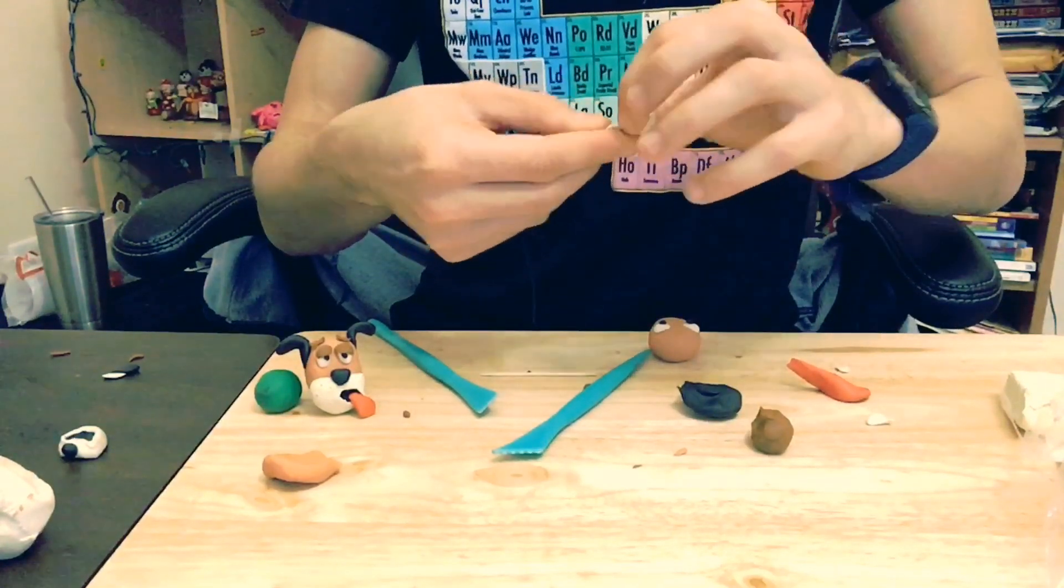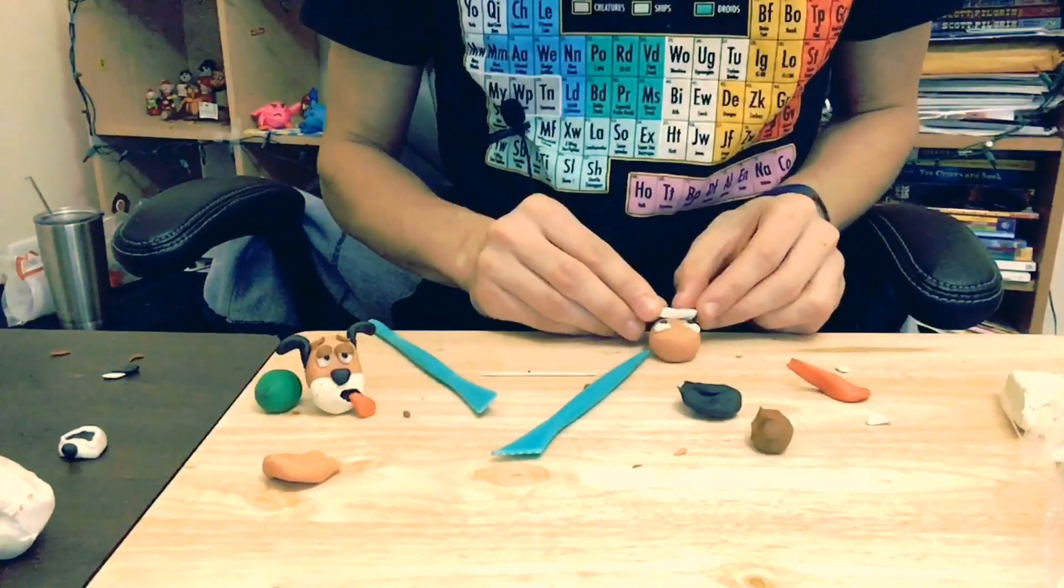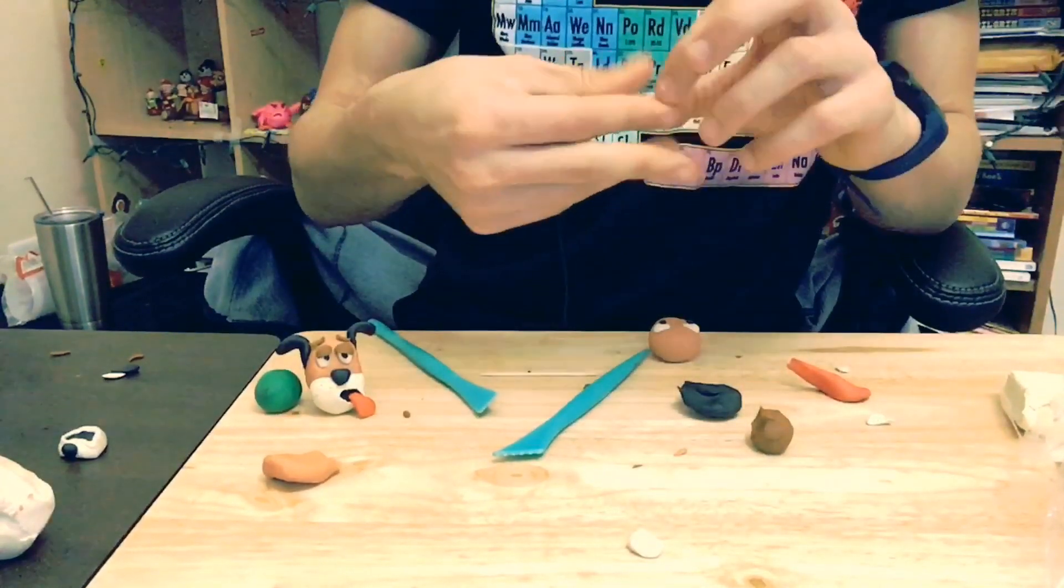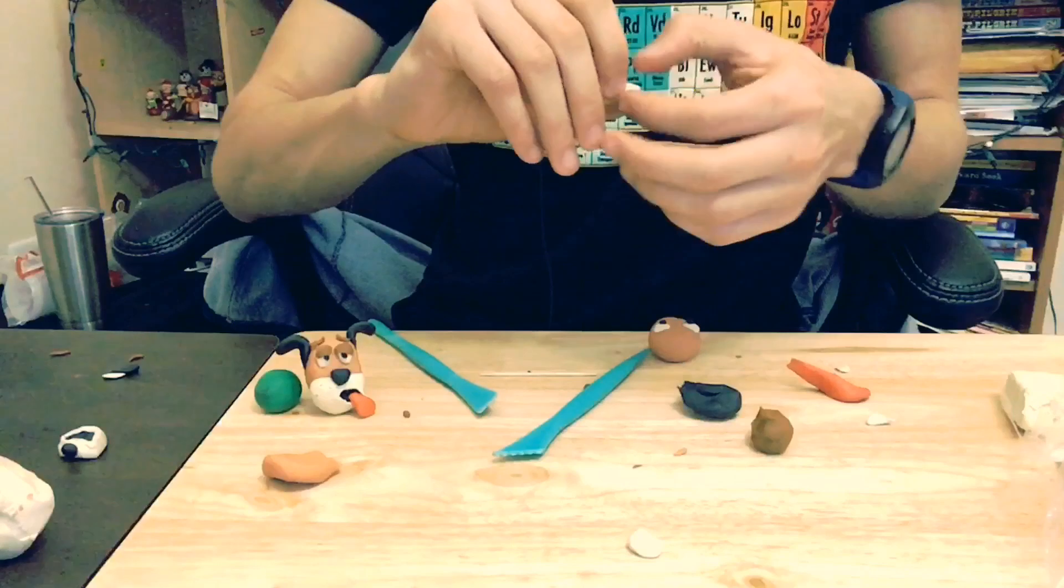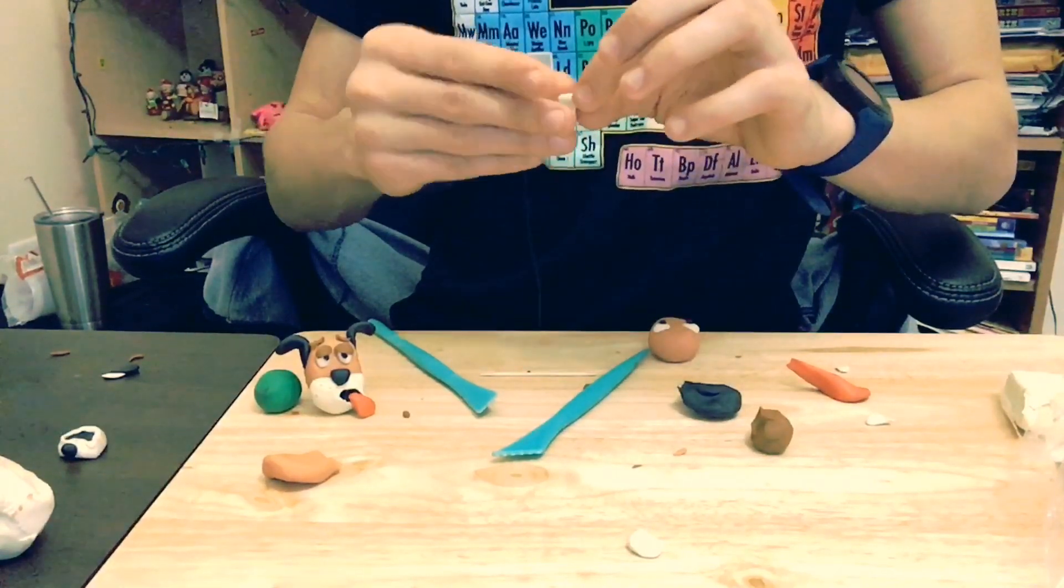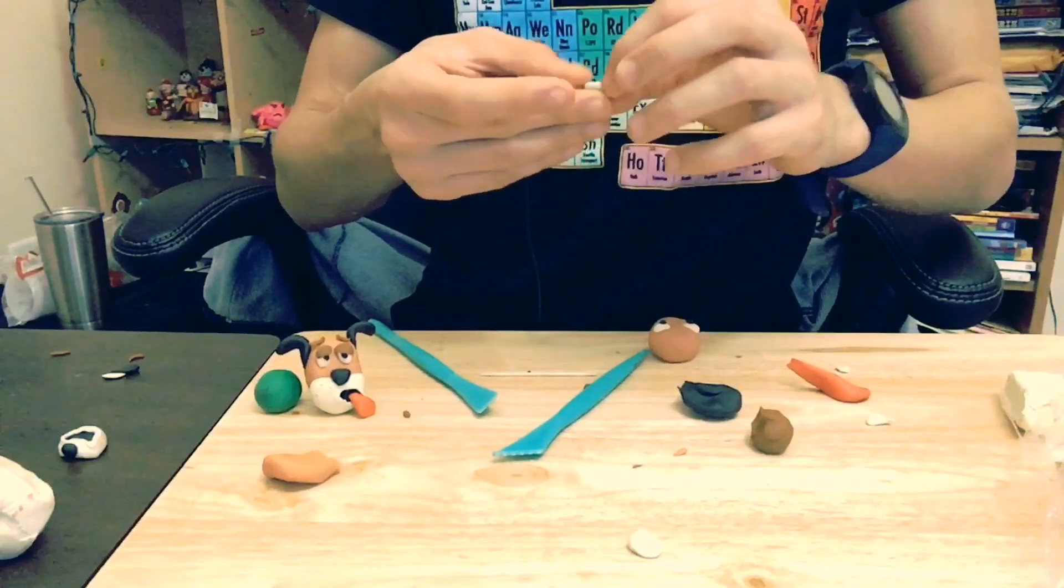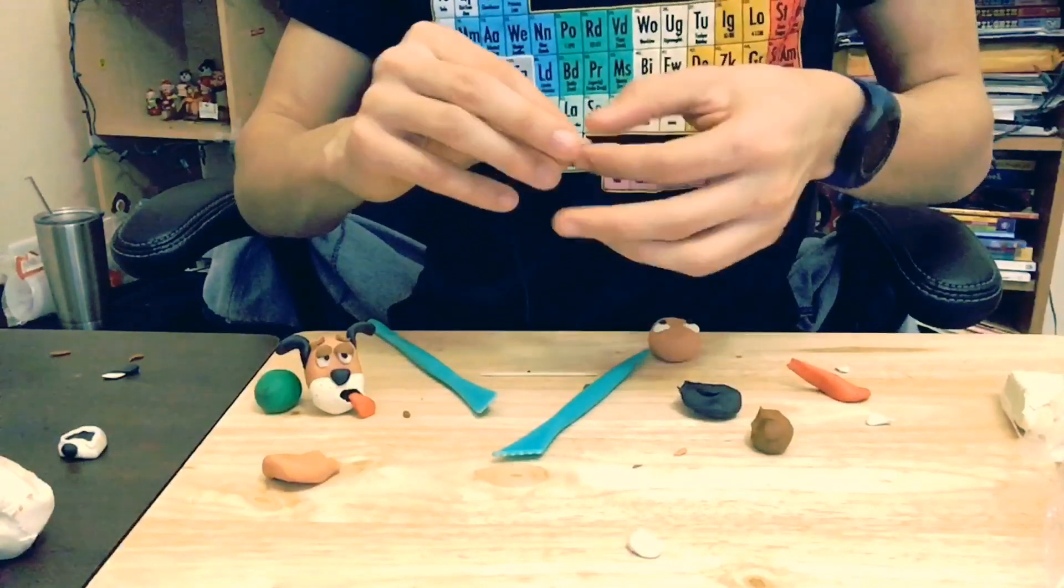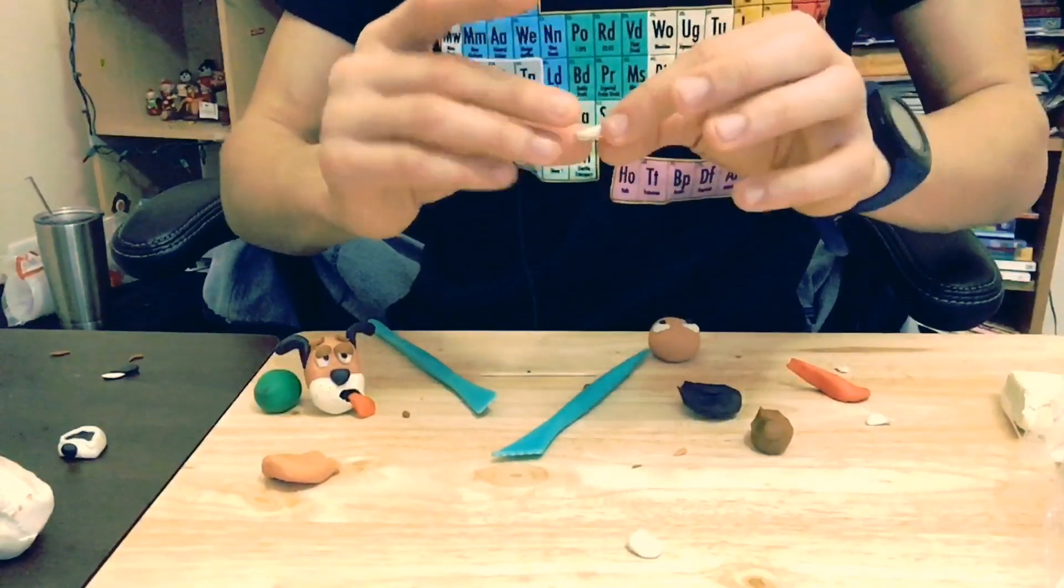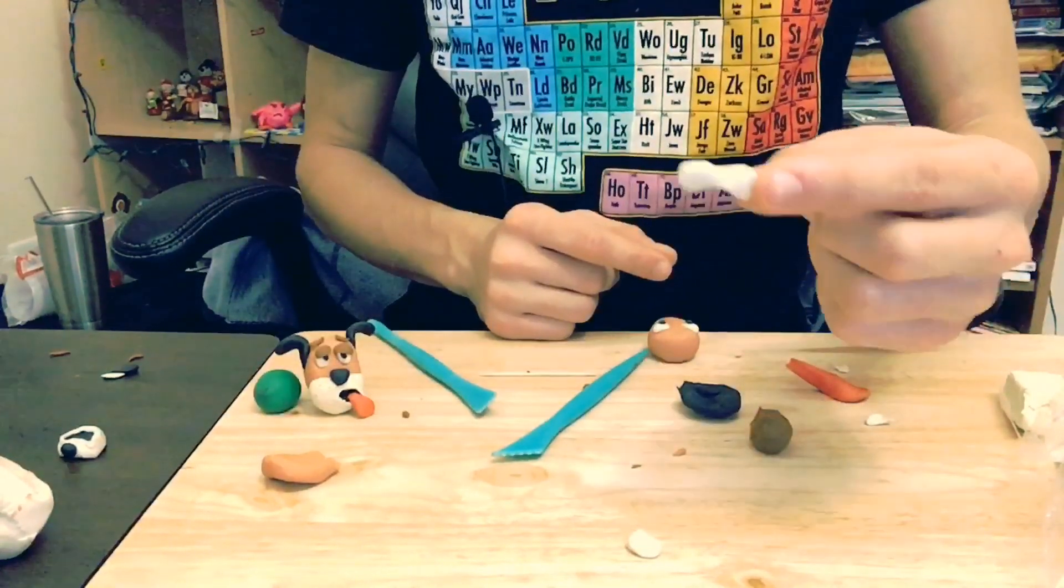Your goal here is to almost make like a peanut shape. You want to make a peanut shape with white clay and make sure it's not too big. There you go, peanut shape.